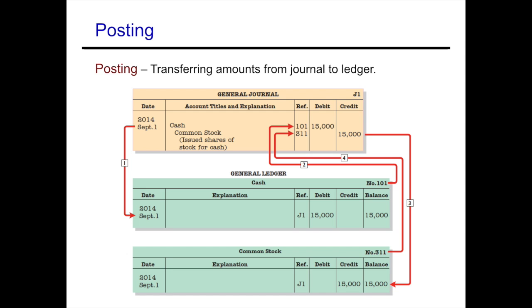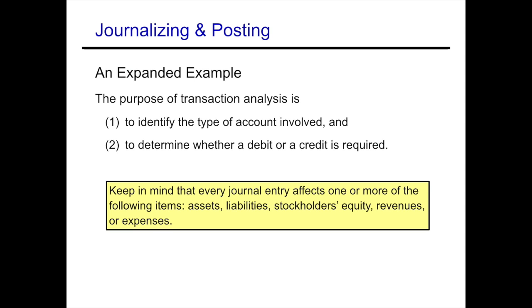You also want to use references. For example, next to cash you see the reference 101, which represents the account number in the ledger. In the ledger, the reference for cash or common stock is J1, which references us back to general journal page one where we can find that journal transaction.